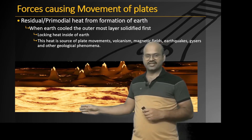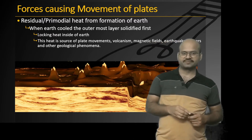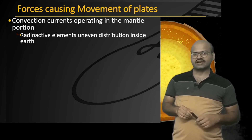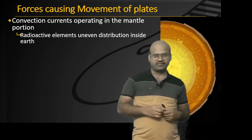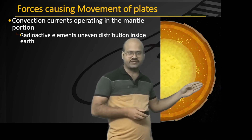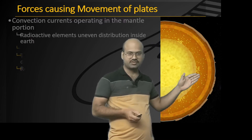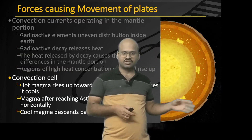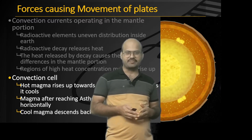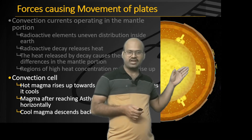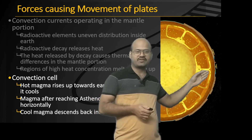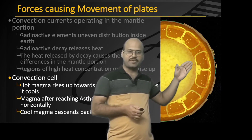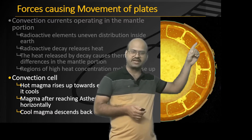Arthur Holmes in 1929 proposed that radioactive elements are unevenly distributed in the earth. The yellow dots in the diagram indicate radioactive elements concentrated at certain locations and sparse at others. When radioactive elements decay, they generate heat. Regions where they are concentrated generate more heat, melting the mantle. This molten mantle rises up, reaches the asthenosphere, moves horizontally, cools down, and comes back down — a continuous cycle. It is this movement of magma within the asthenosphere that provides the force for moving the plates lying above it.